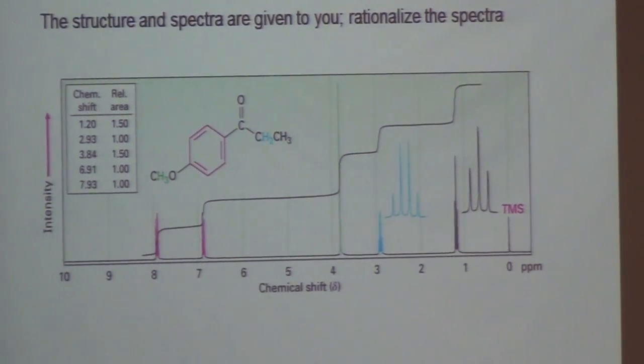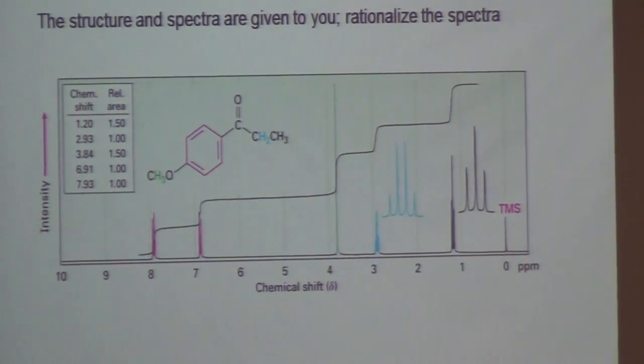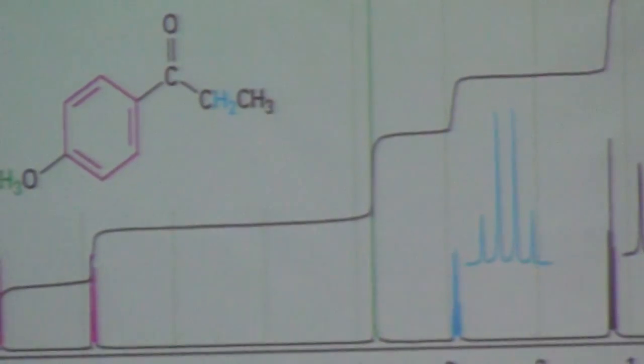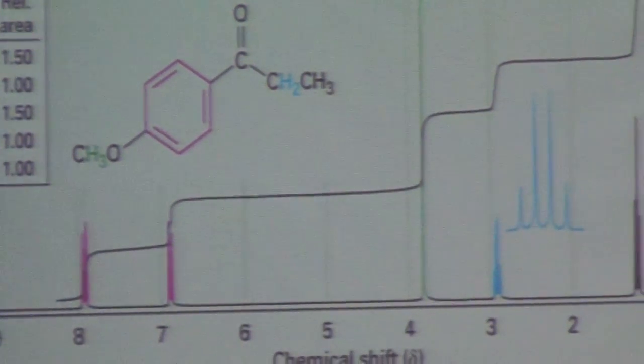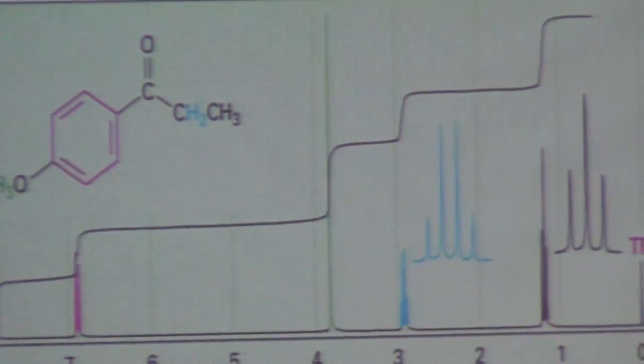It cannot be split. So that one peak which is unsplit must be the methoxy peak. Straight away I know that. And where does it come at 4? Why should it come at 4? It should because it is attached to an oxygen atom and therefore it is deshielded. And that's the reason why I have it somewhere near 3.8.